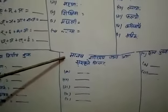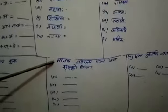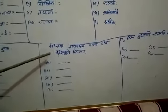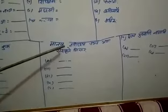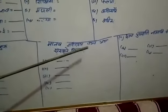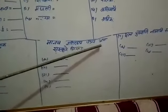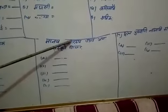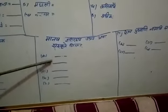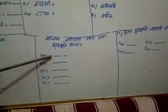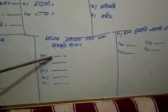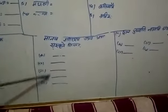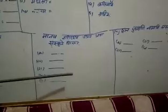और यह देखिए — five के बाद six number, six erase हो गया है। आप लोग अपने आप से इस chapter में मस्तक, शीर, नाशिका — यह सब इसमें लिखेंगे।